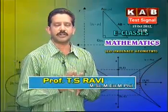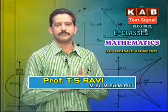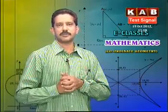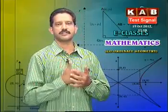So the coordinate geometry share is 43 marks: Circles gets 22 marks, and Parabola, Ellipse, and Hyperbola each carry one long answer question.